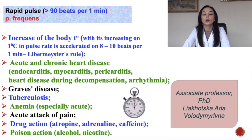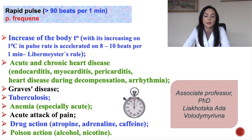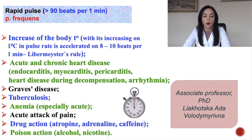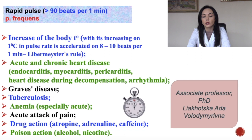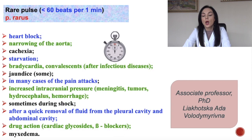Acute and chronic heart diseases — endocarditis, myocarditis, pericarditis, arrhythmia — can also lead to increasing of pulse. Graves disease, tuberculosis, anemia (especially acute anemia), acute attack of pain, poisoning, and drug action can also lead to pulsus frequens.